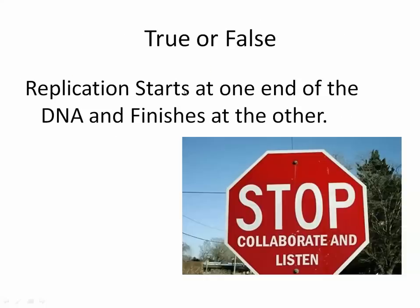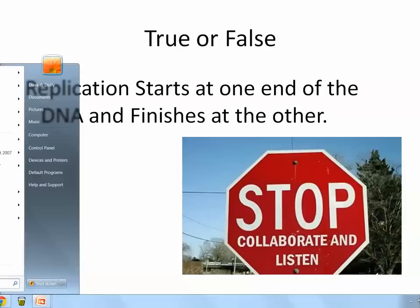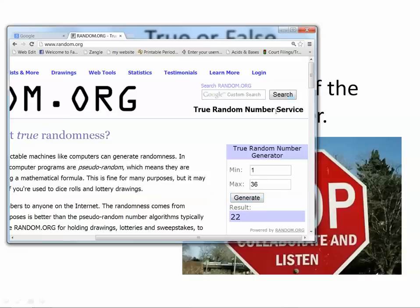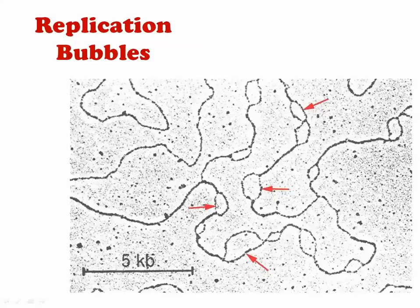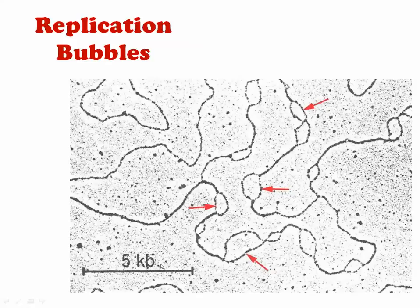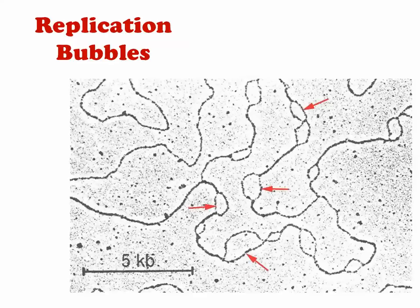True or false? Replication starts at one end of the DNA and finishes at the other. Go ahead and give 30 seconds. I think that's not too bad. All right. Number 22. You are lucky. You get to go again. If that didn't work, number 10. All right. There's our answer. Replication bubbles. It is false. We have replication bubbles. So, it's going on multiple places throughout the DNA. If we were not to have these replications, it would take forever. It already takes six hours. There are trillions of base pairs. We need these replication bubbles to make it go faster.